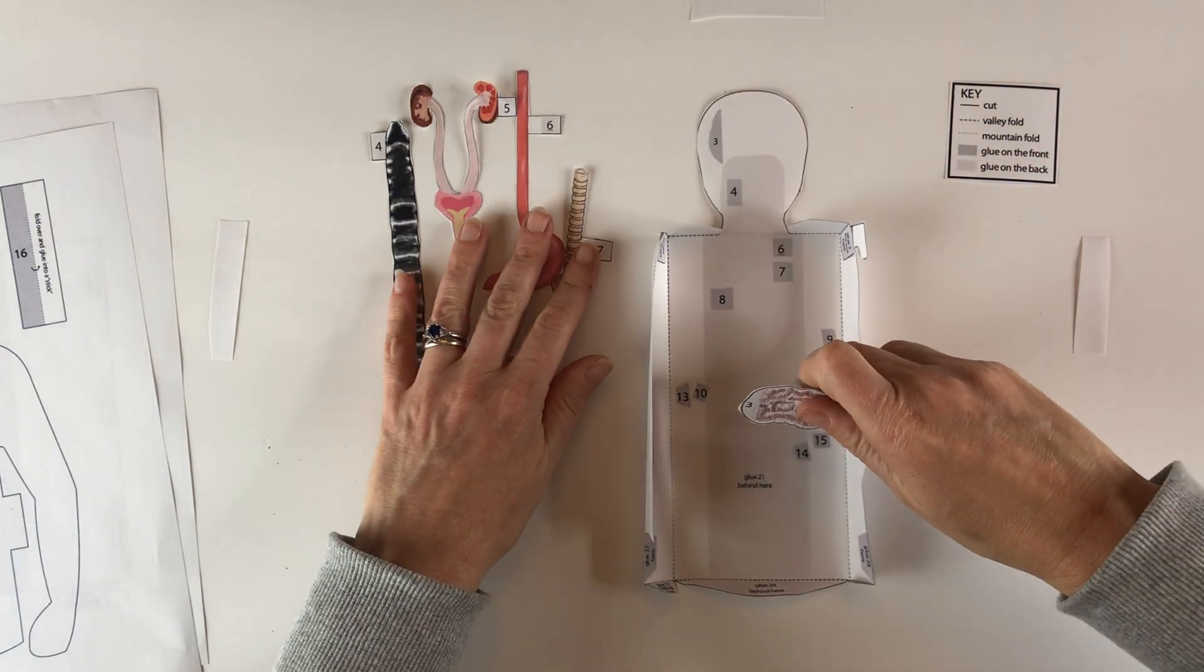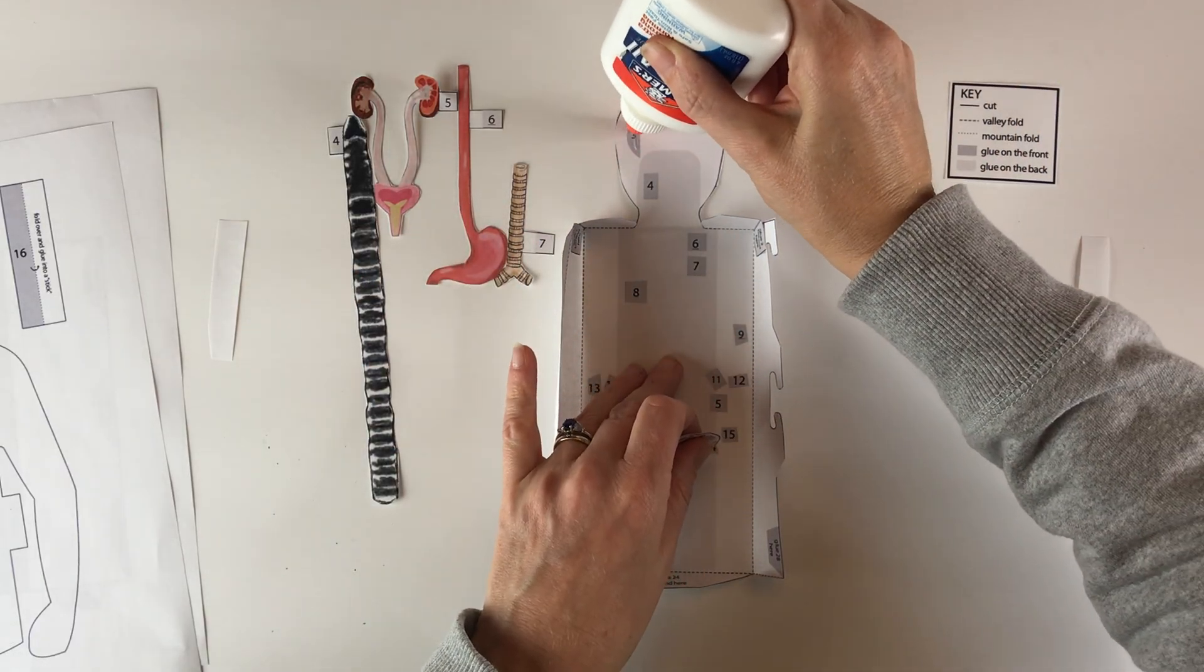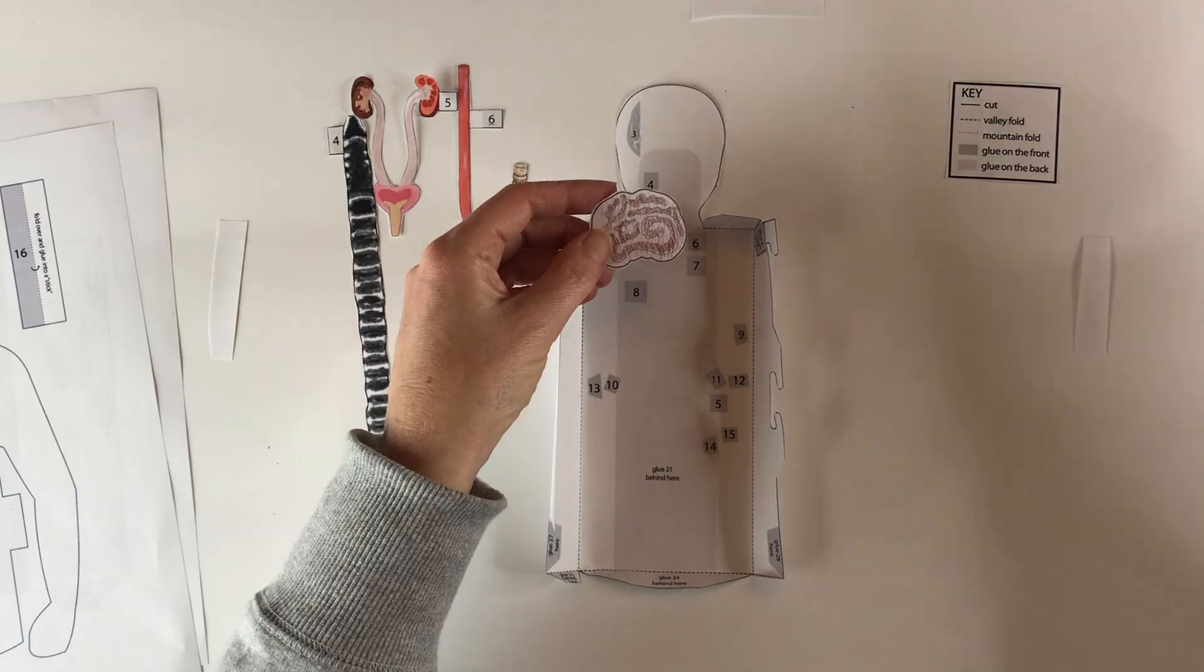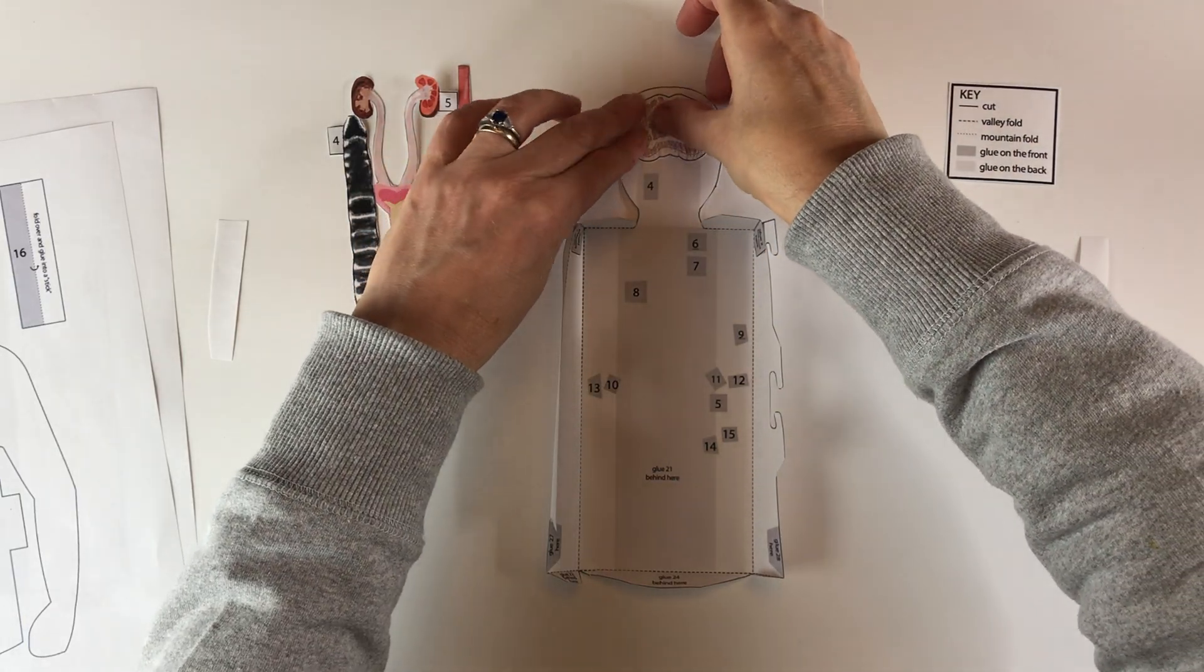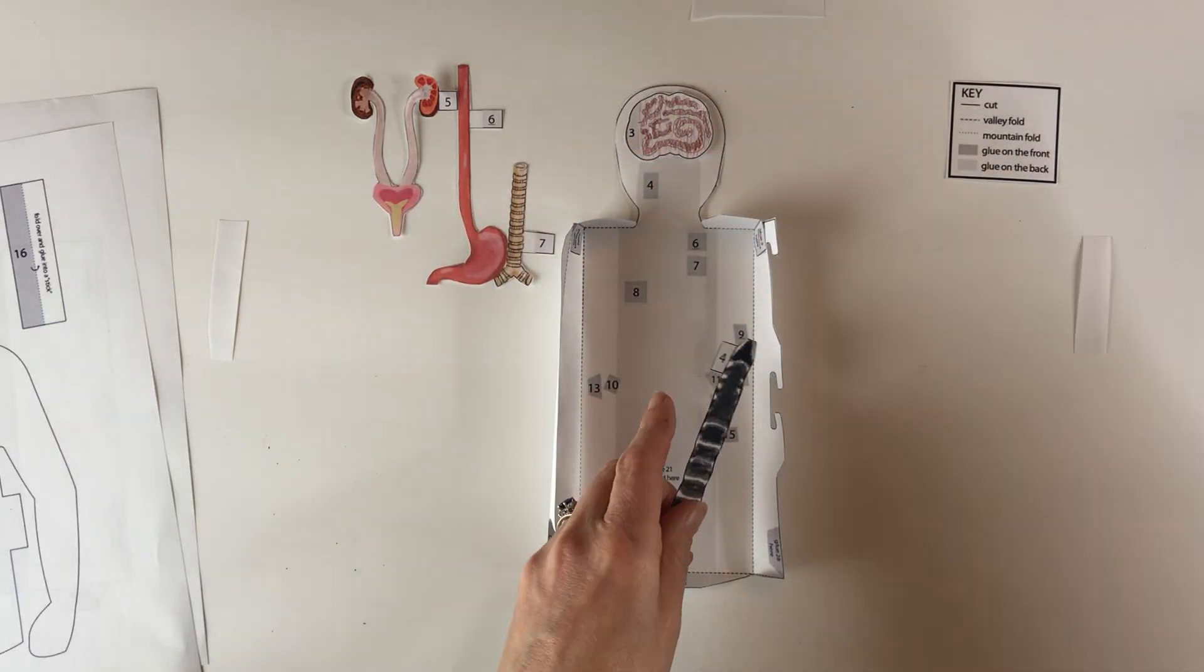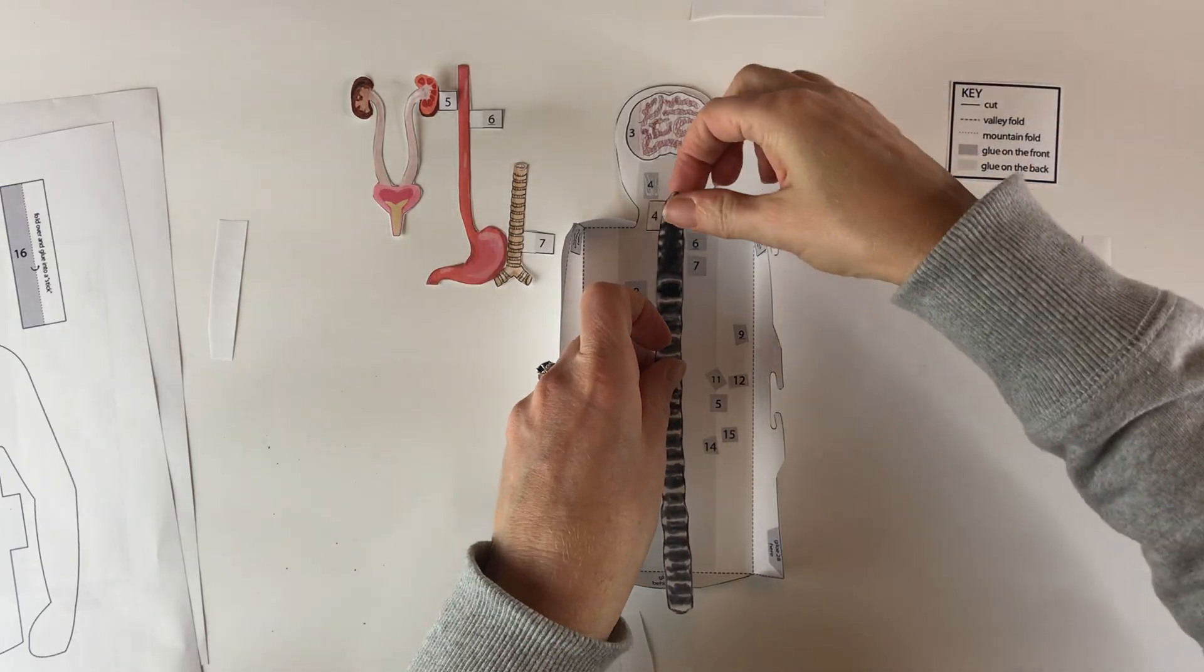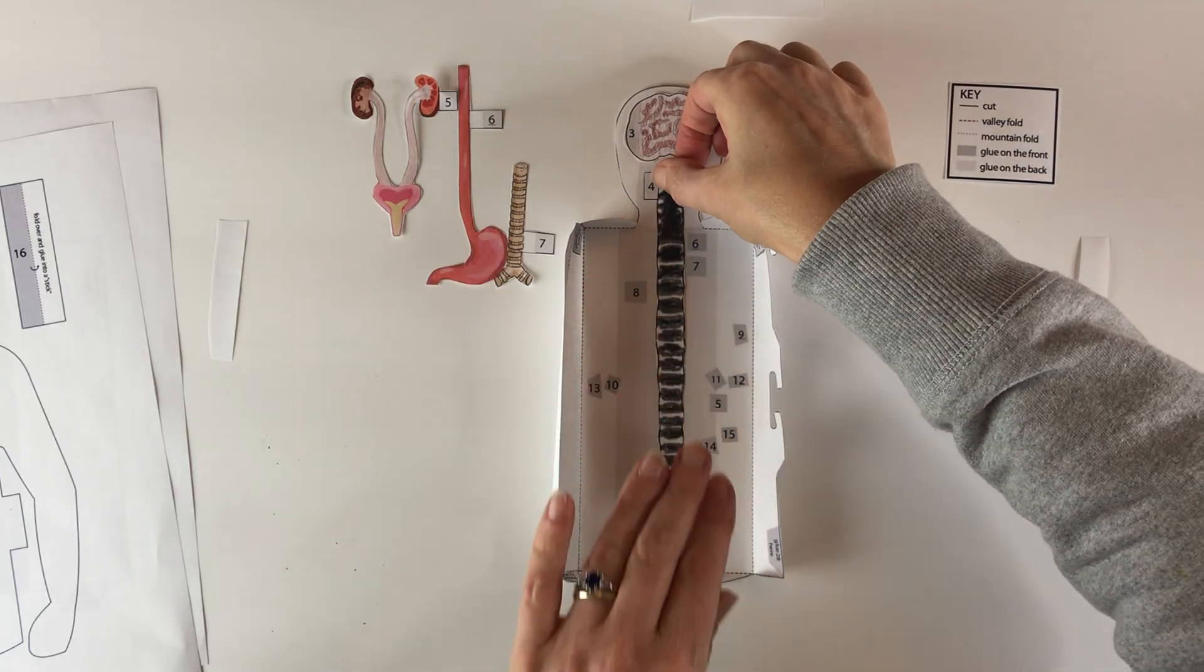So beginning, for example, here with the brain. And you just line up the numbers. So this is number three, it has a three here, just line it up like that. Spinal cord goes here, like so.